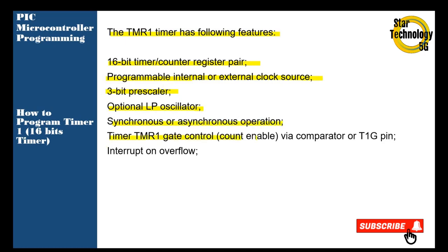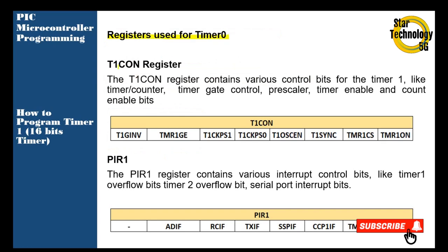Timer 1 gate control enables via comparator or T1G pin, interrupt on overflow. The T1CON register is used for Timer 1 counter register. The T1CON register contains various control bits for Timer 1 like timer/counter, timer gate control, prescale, timer enable, and count enable bits. The PIR1 register contains various interrupt control bits like Timer 1 overflow bits, Timer 2 overflow bits, and serial port interrupt bits.